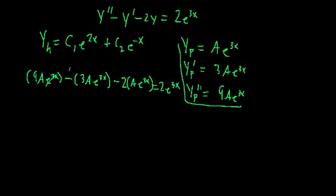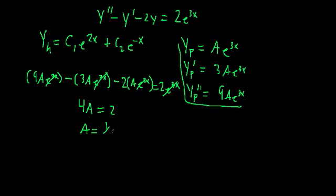After dividing by e^(3x), all the exponential factors cancel, and we're left with 9A − 3A − 2A, which simplifies to 4A, equal to 2. This means A = 1/2, so the particular solution is (1/2)e^(3x).